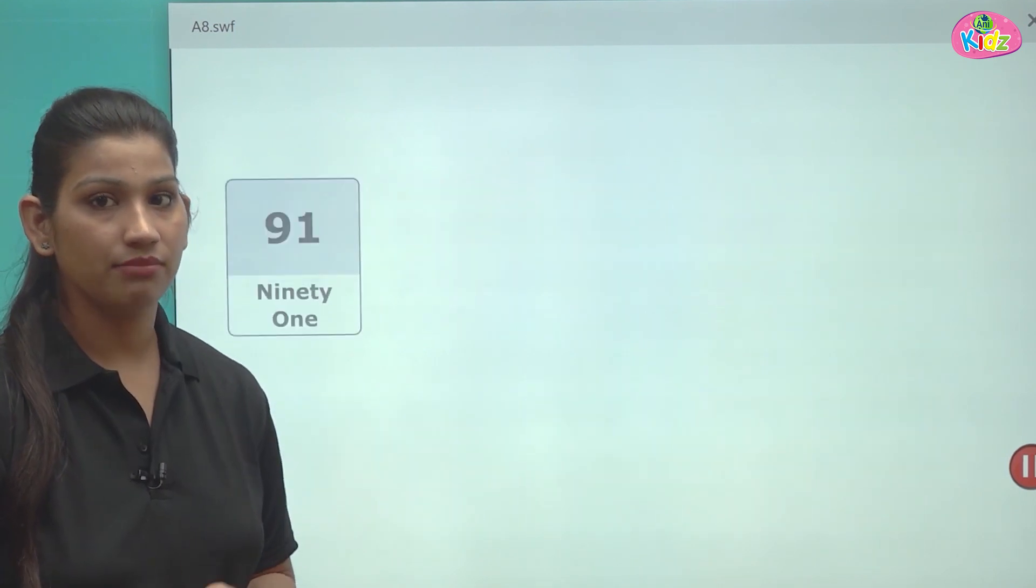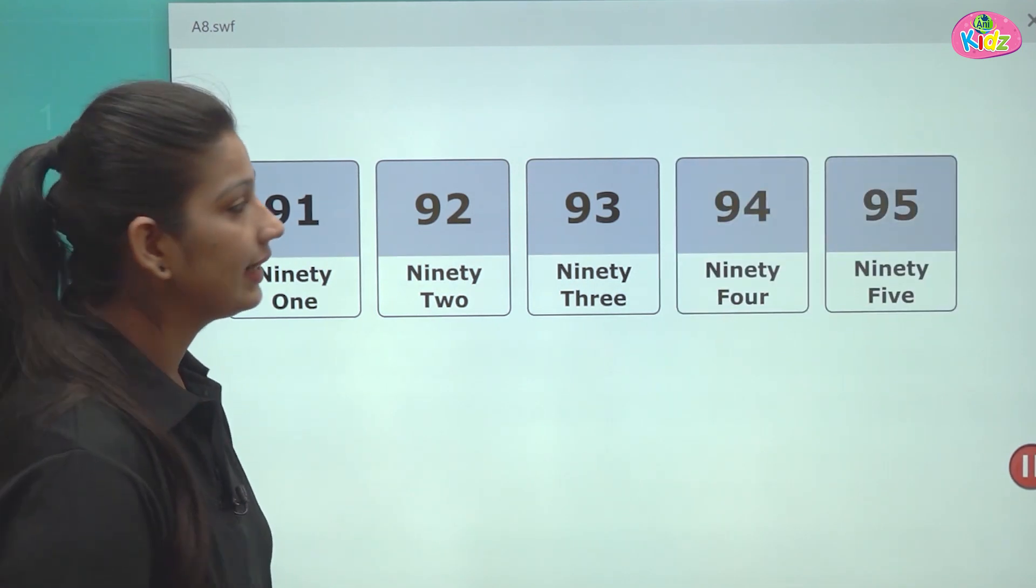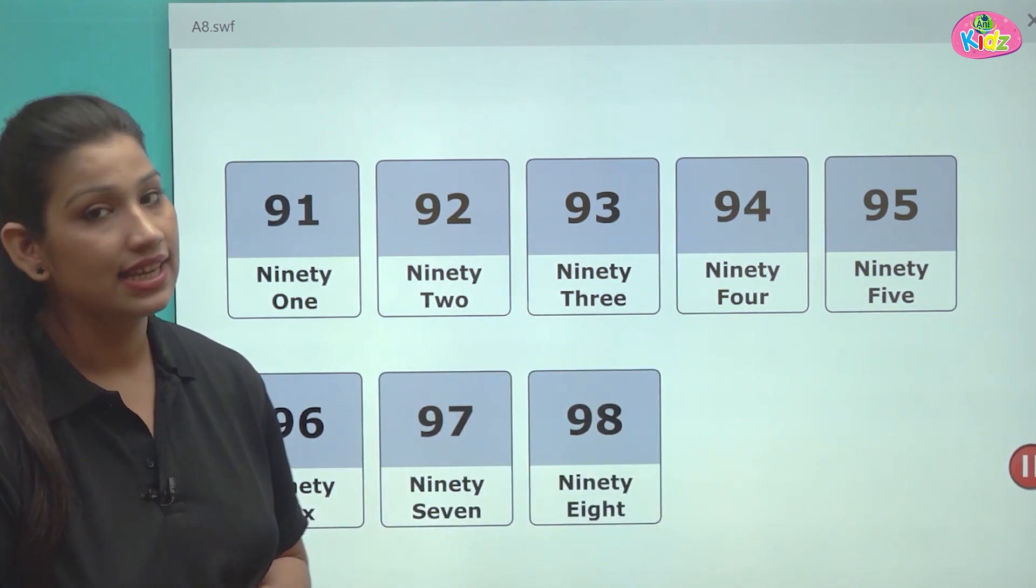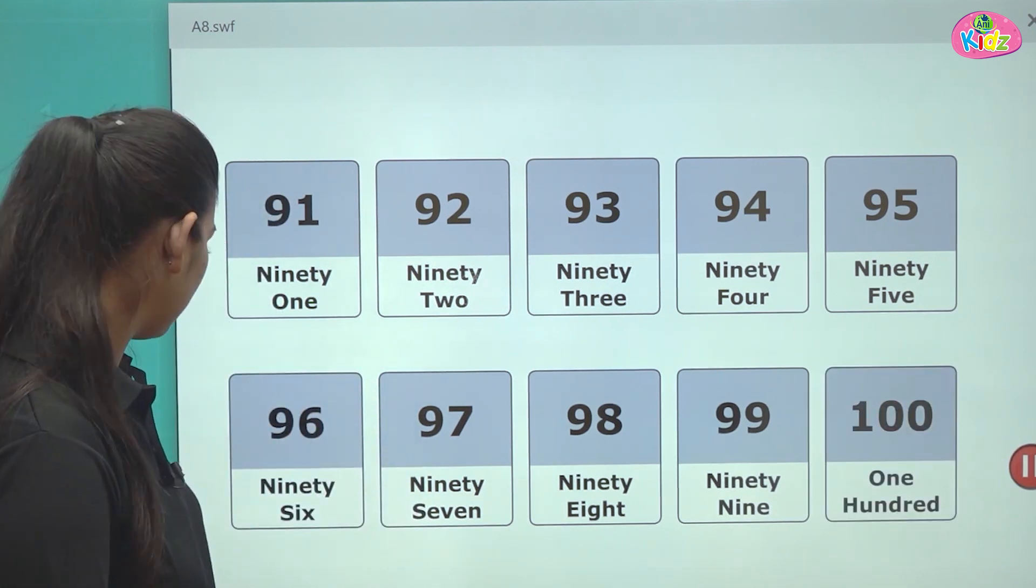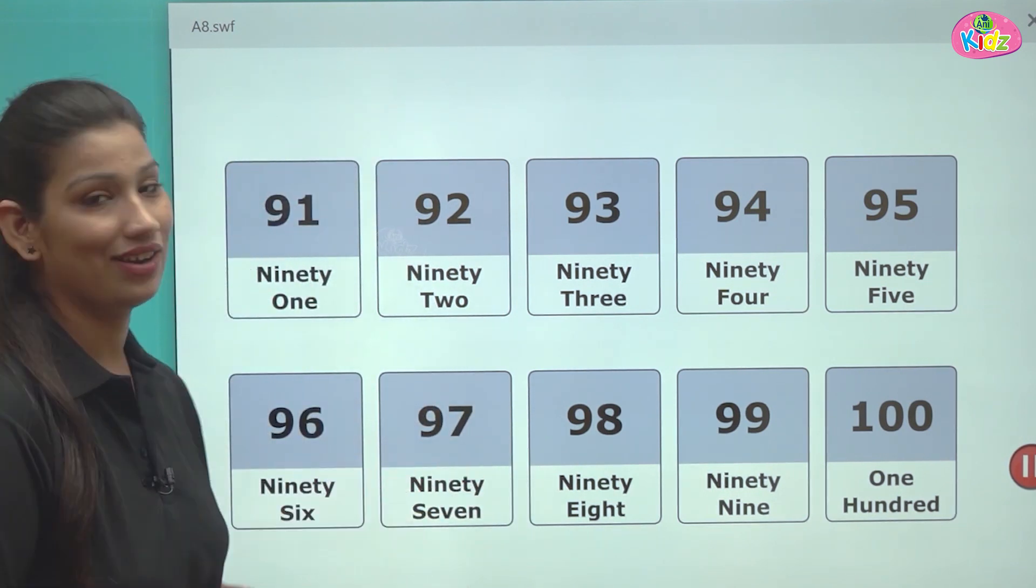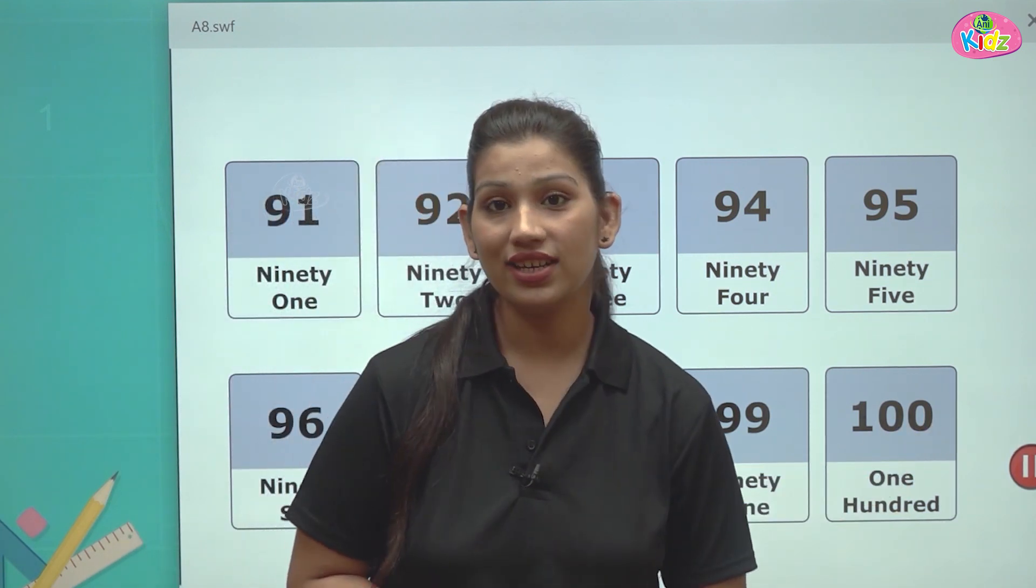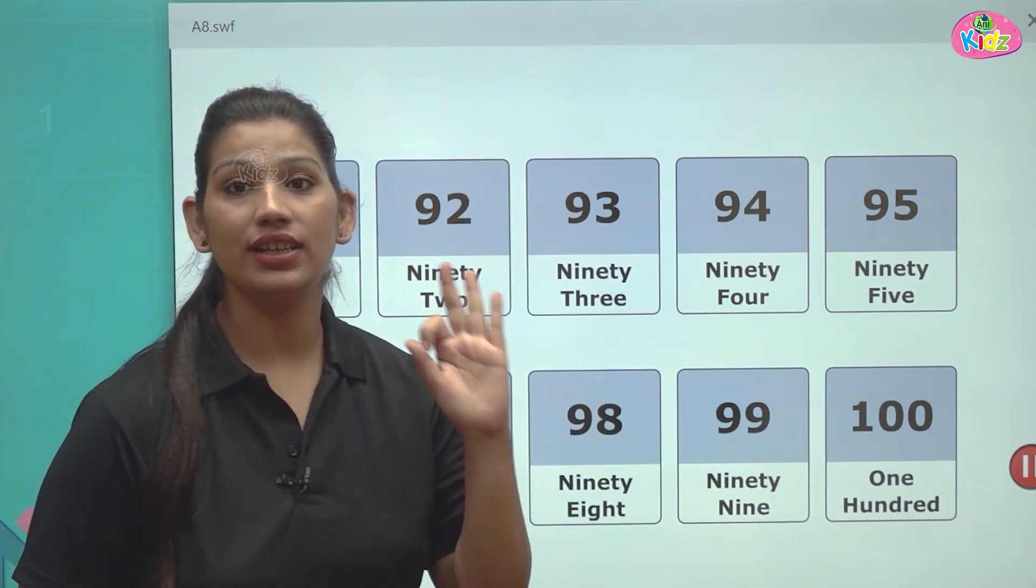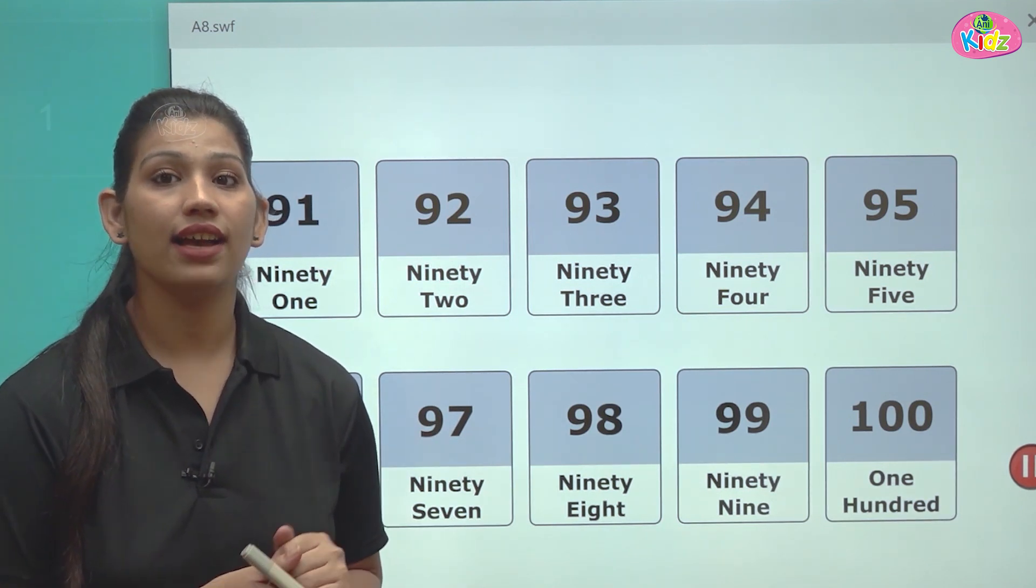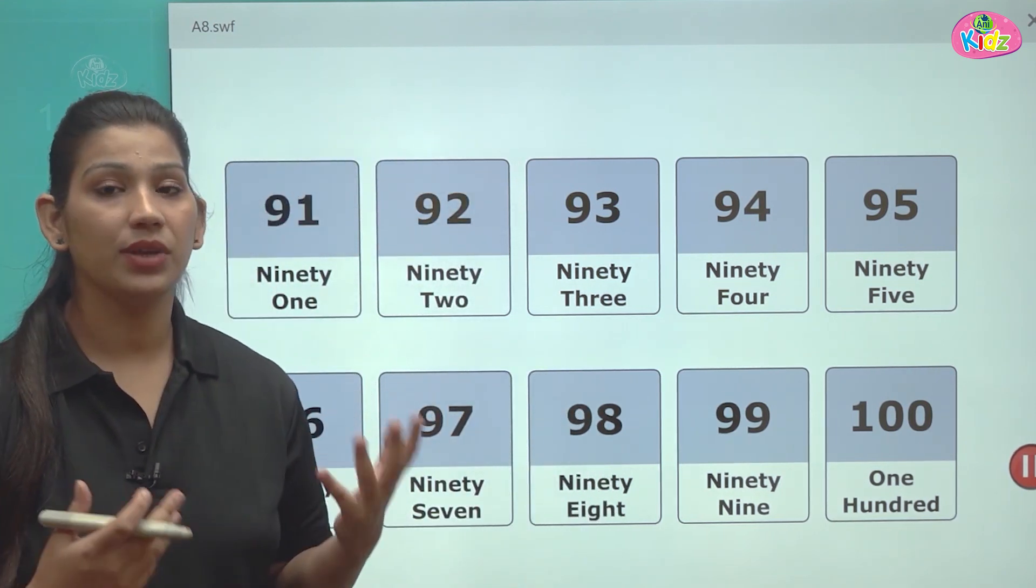After 90 there comes number 91. Then comes 92, 93, 94, 95, 96, 97, 98, 99 and 100. One double zero is 100. You know students 100 is a three digit number. One, two, three. 100 is a three digit number. And 100 spelling is H-U-N-D-R-E-D. 100 becomes 100.